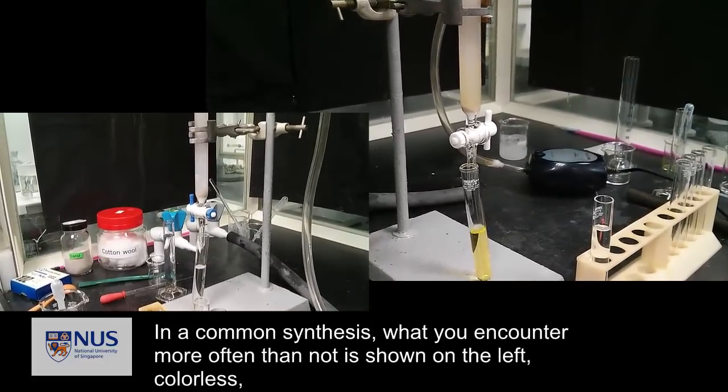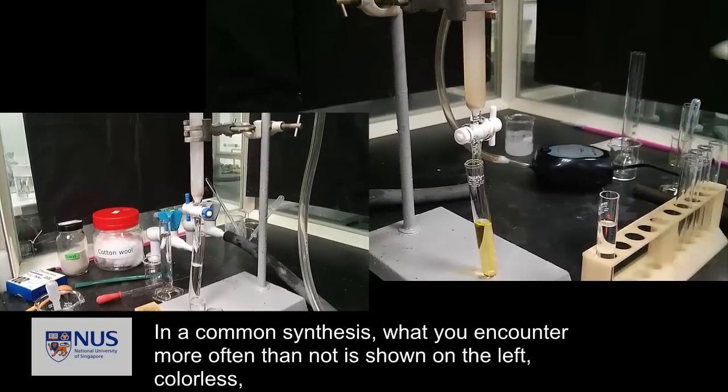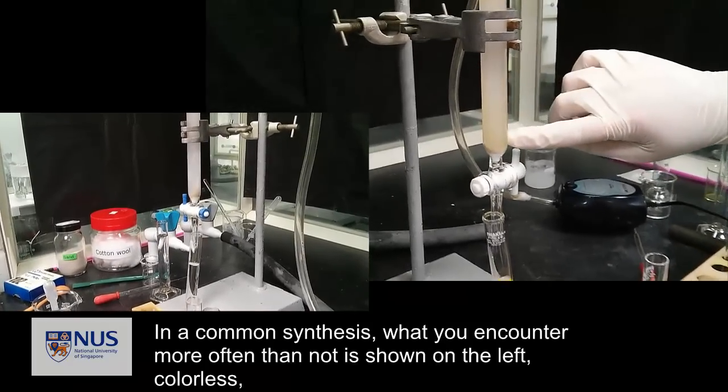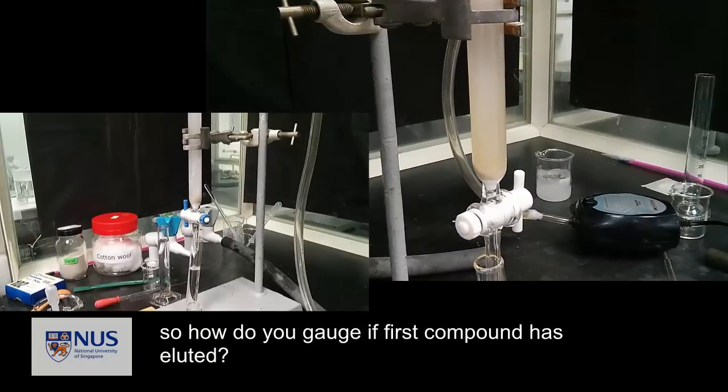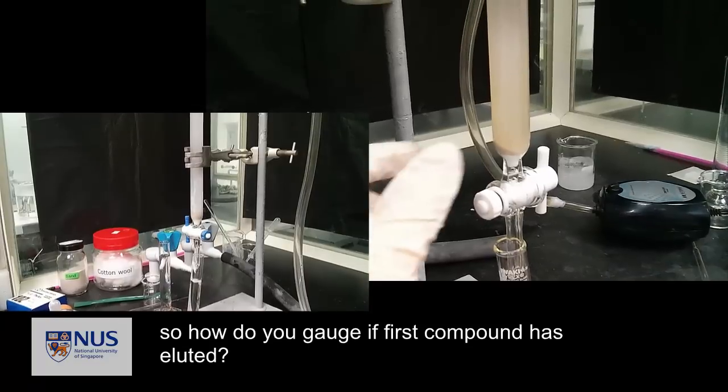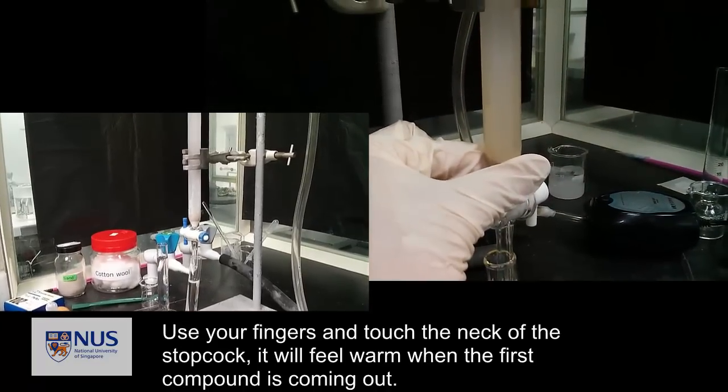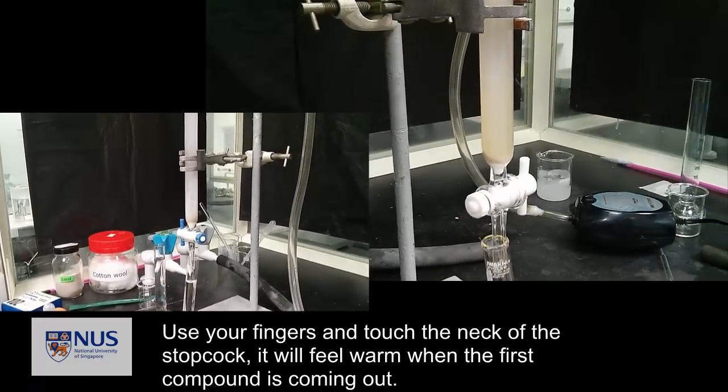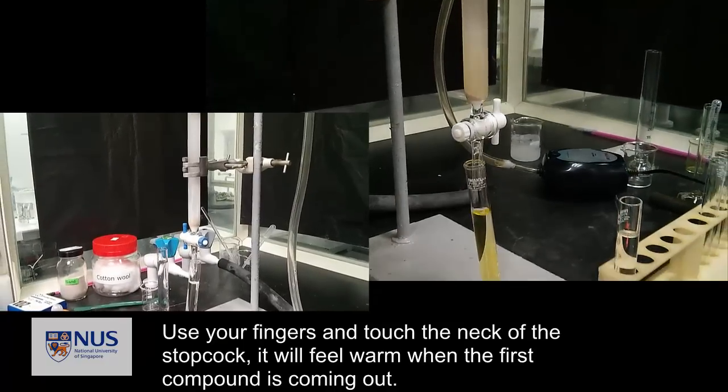In a normal synthesis, what you encounter more often than not is shown on the left—all colorless. So how do you gauge if the first compound has eluted? Use the fingers and touch the neck of the stopcock. It will feel warm when the first compound is coming out.